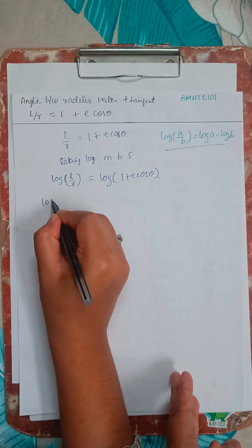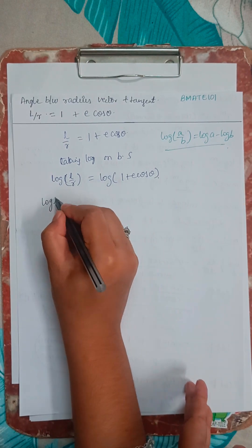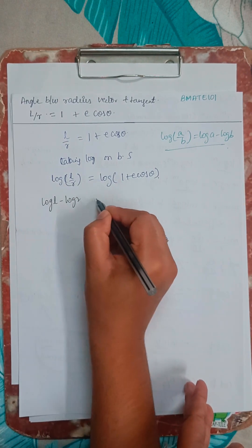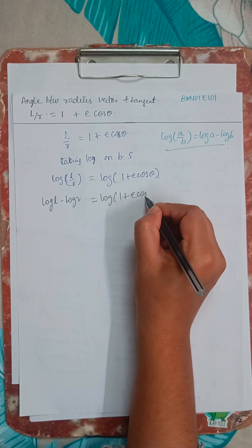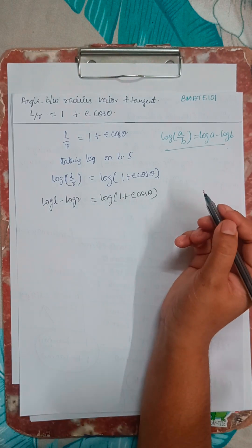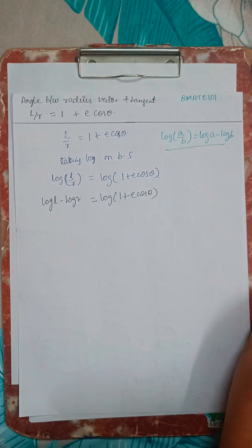So I will write log L minus log R equals to log. This is nothing but as it is. Log A plus B is as it is, right? Log 1 plus A cos.